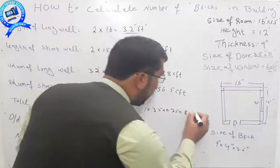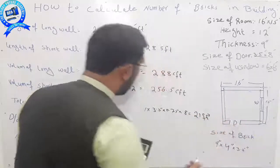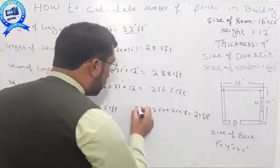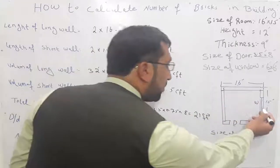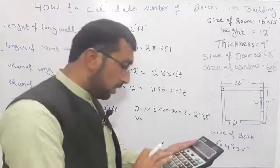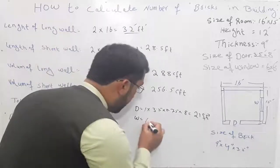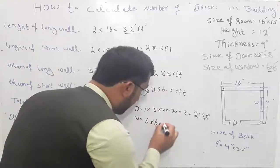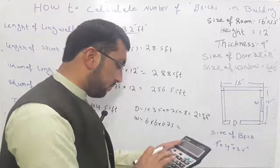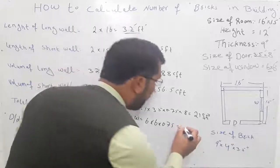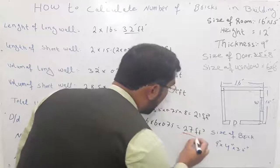This is 21 cubic feet. There are two doors, and there are window. Window is number five, 6 by 6, 6 by 6 by 0.75. There are 27 cubic feet.